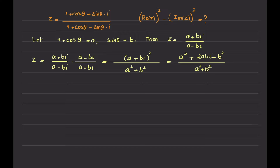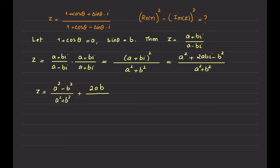Now, if I separate the real and imaginary parts, z becomes: A squared minus B squared divided by A squared plus B squared — that forms the real part — and then 2AB divided by A squared plus B squared times i, which is the imaginary part. So the real part of z is A squared minus B squared over A squared plus B squared.